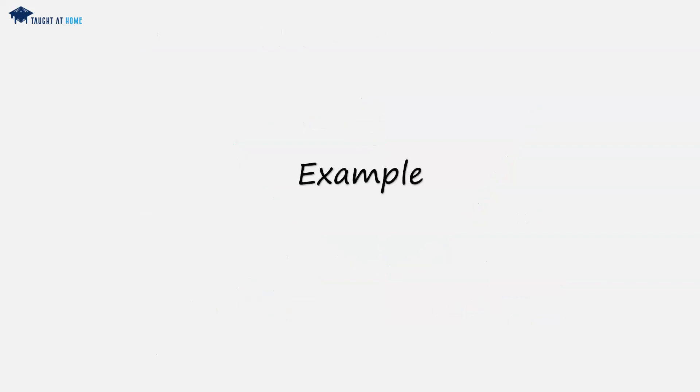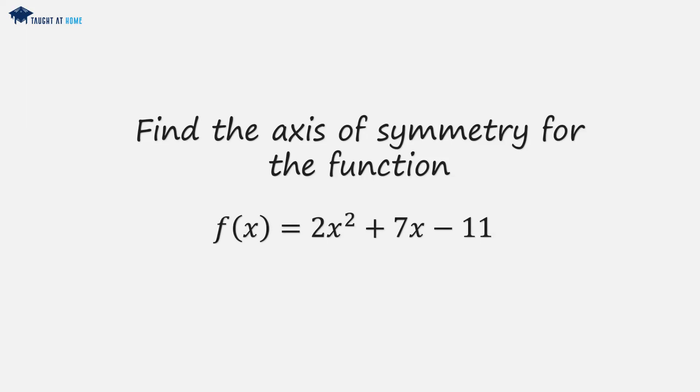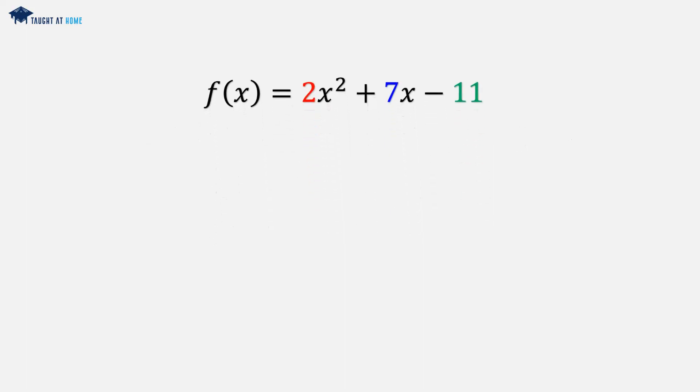So let's have a quick example. Find the axis of symmetry for the function f of x equals 2x squared plus 7x minus 11. We can compare this with the quadratic equation ax squared plus bx minus c and see that we have the axis of symmetry at minus b over 2a where b is 7 and a is 2.